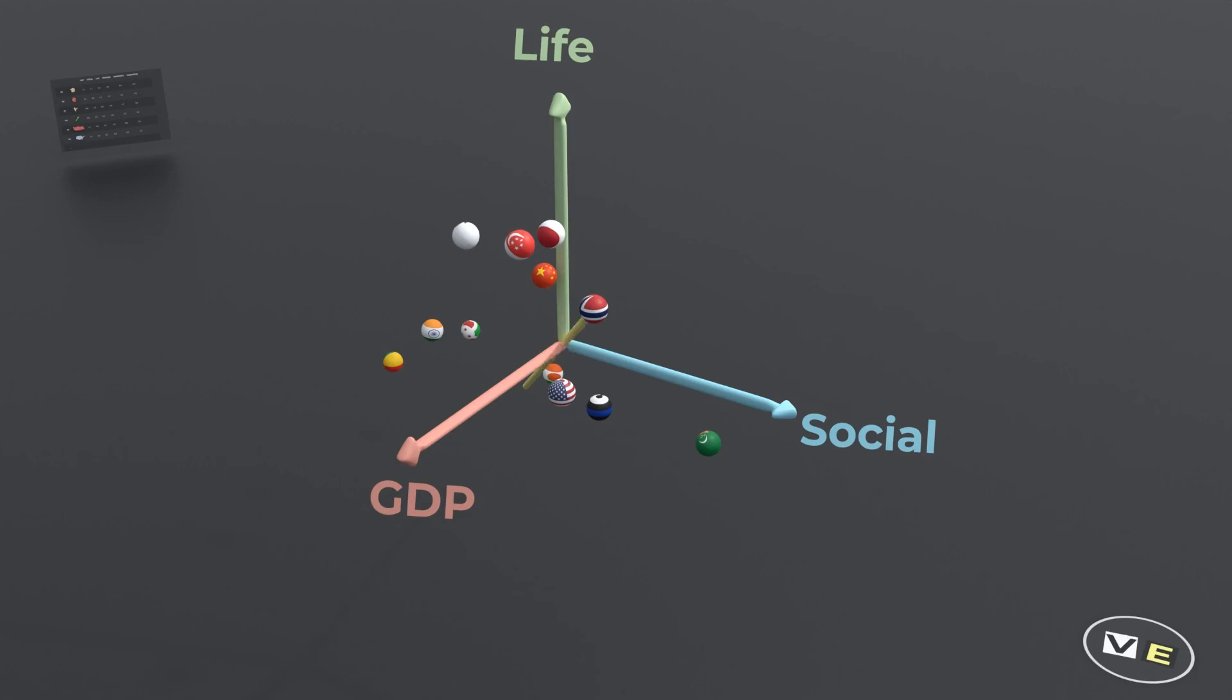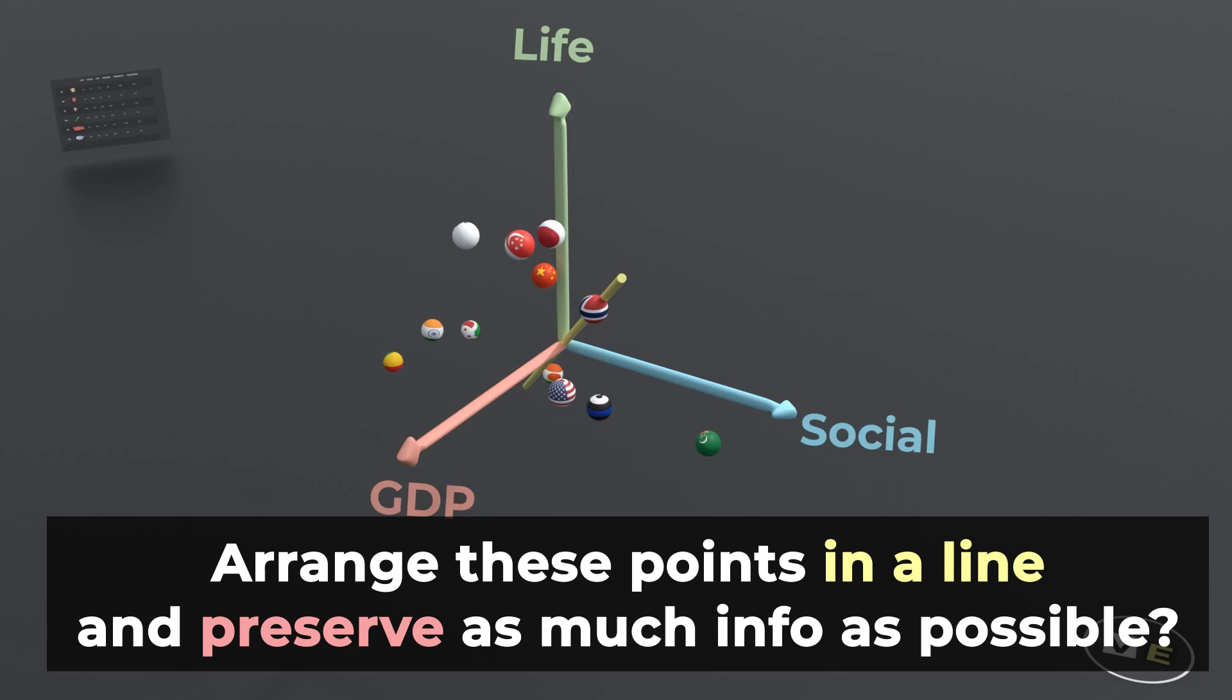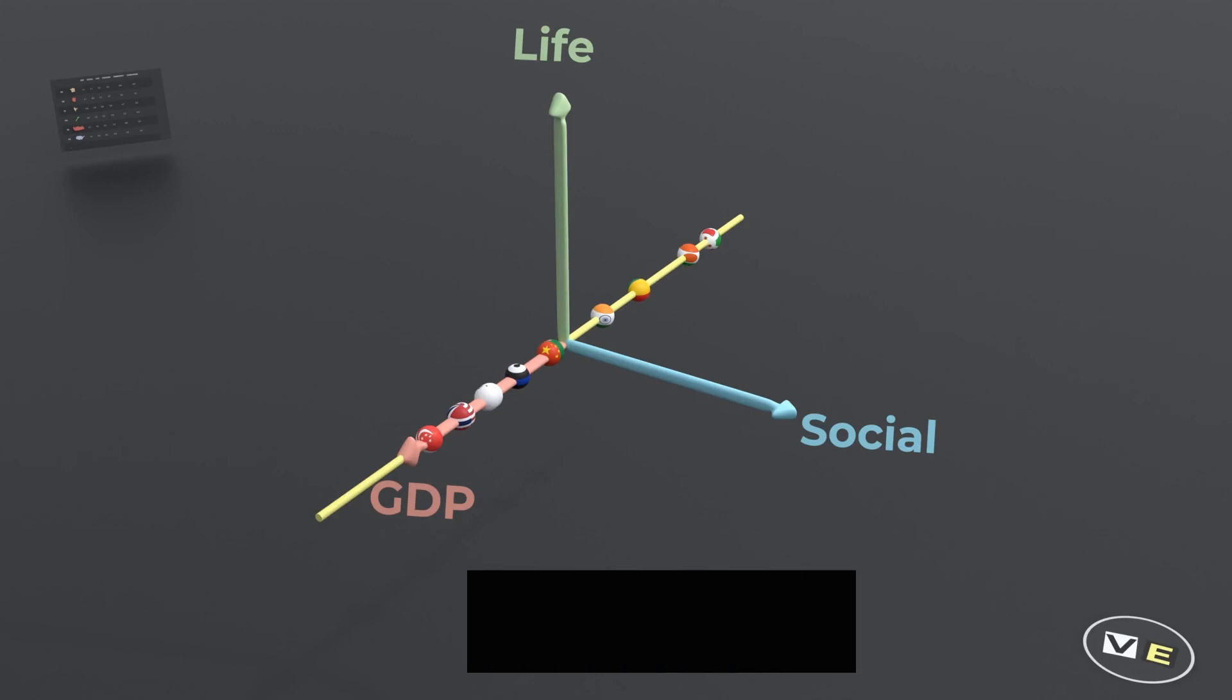To pick the first component, PCA asks the following question. How can we arrange these points on a line in a way that preserves as much information as possible? A first attempt is to project all of these points on one of the 3D axes, but that corresponds to throwing away all the other columns of the data, so maybe there is a better, less wasteful way.